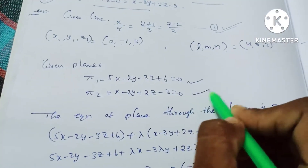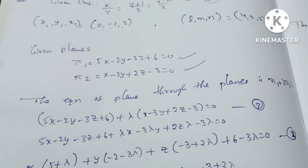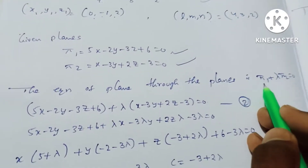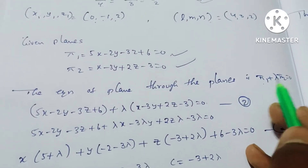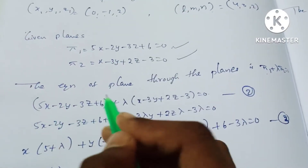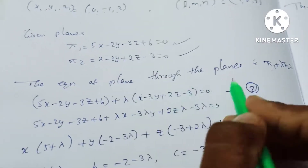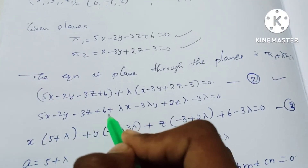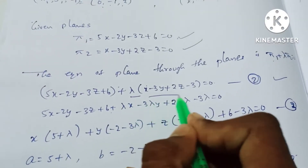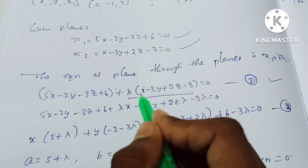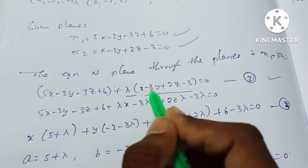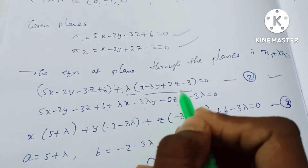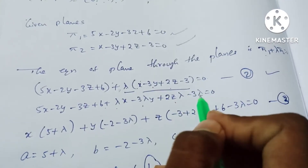We have Plane 1 and Plane 2. The equation of a plane through both given planes is: Plane 1 plus lambda times Plane 2 equals zero. Plane 1 gives one plane and lambda times Plane 2 gives the plane between them.